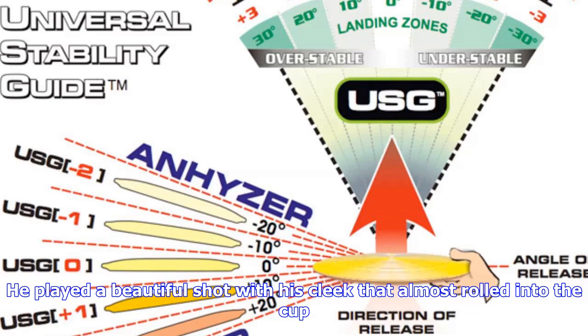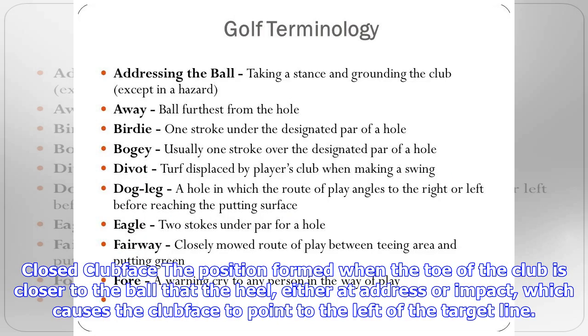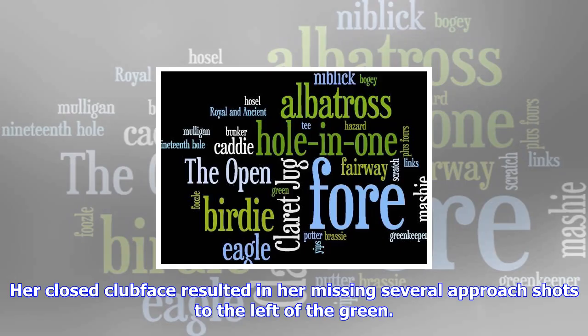Center of rotation: the axis or swing center that the body winds and unwinds around during the swing. A stable center of rotation is an important element to solid ball striking.